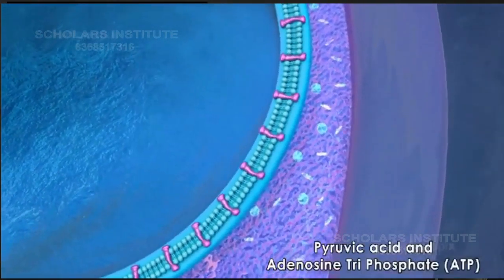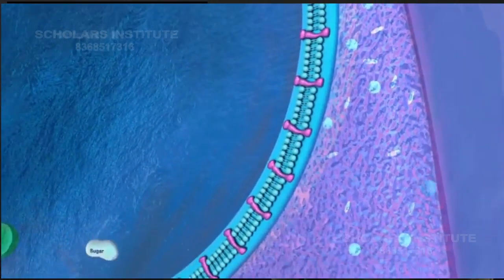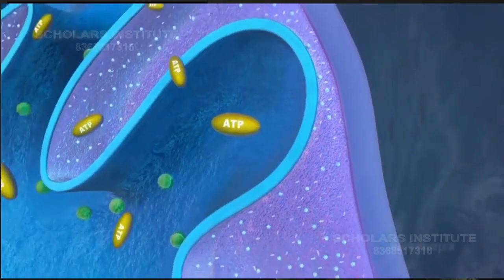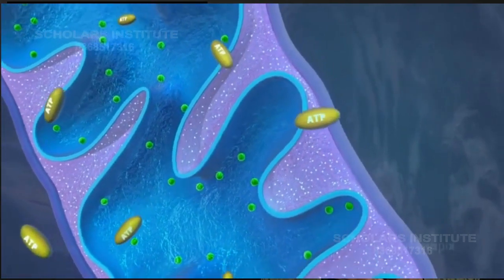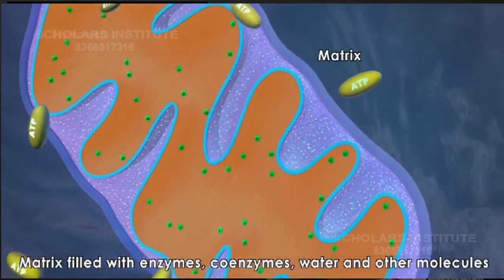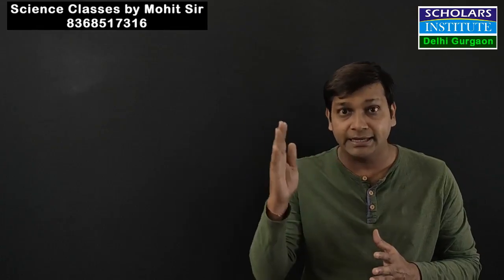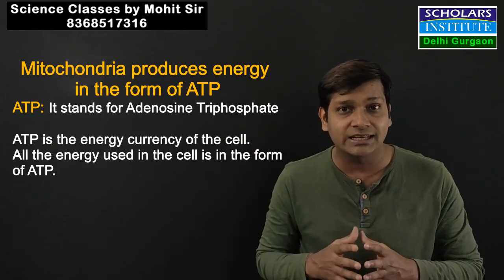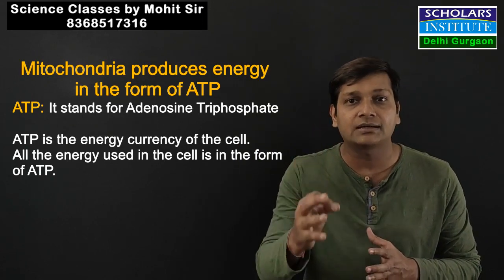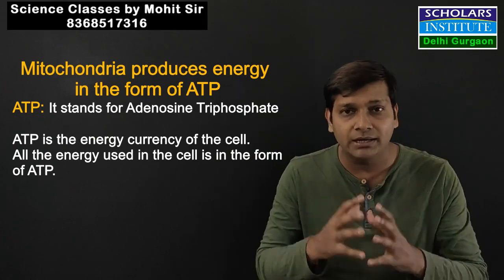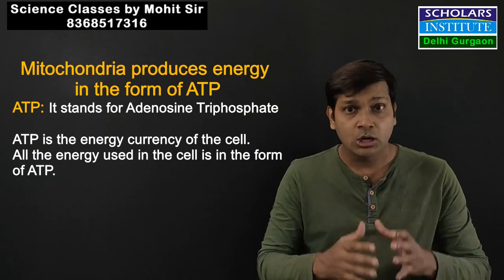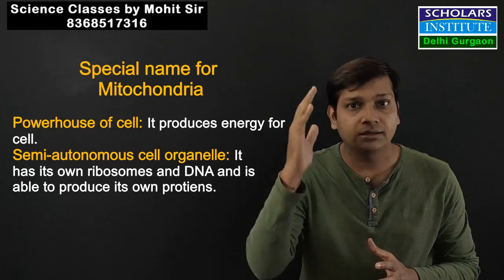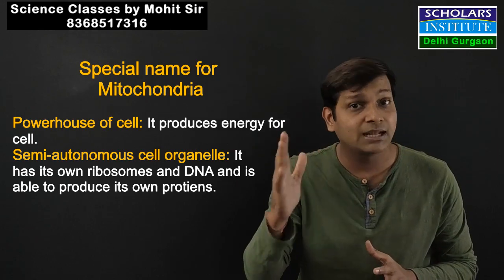Mitochondria plays a role in cellular respiration. The reactions of cellular respiration occur on the folded inner membrane. In cellular respiration, glucose reacts with oxygen to release energy. The energy that mitochondria releases is in the form of ATP — adenosine triphosphate. ATP is called the energy currency of the cell. Any energy used in a cell will be in the form of ATP, and mitochondria produces it — this is why mitochondria is called the energy producer or powerhouse of the cell.